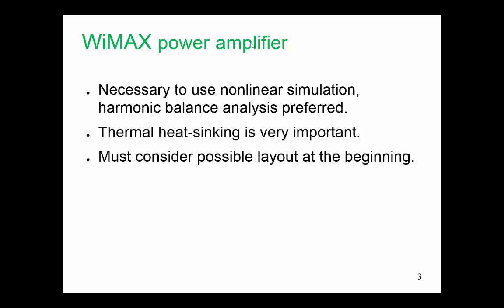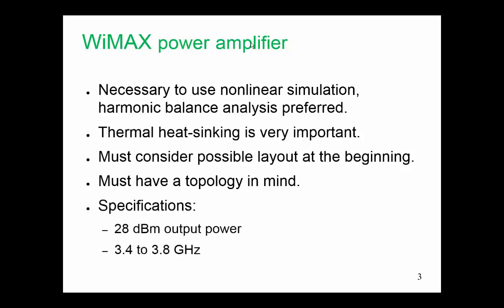It turns out that there are only a few possible layouts. So we have to have a topology in mind. Perhaps there are four or five layouts that work for this type of amplifier that we're designing. And here our specifications are that we want a 28 dBm output power. When that is indicated, that is referring to the 1 dB gain compression point, and we need to operate from 3.4 to 3.8 GHz. That is a little bit over 10%, which means that the design can be quite challenging.